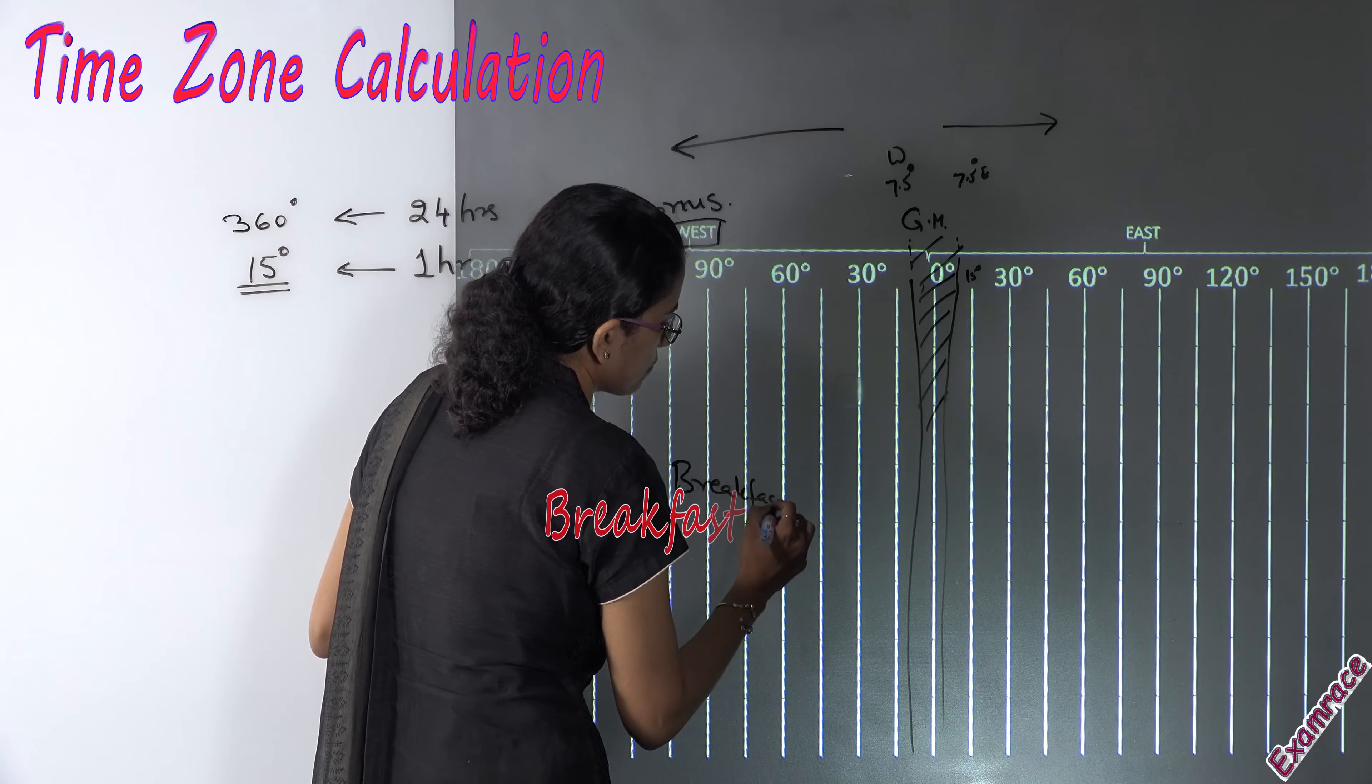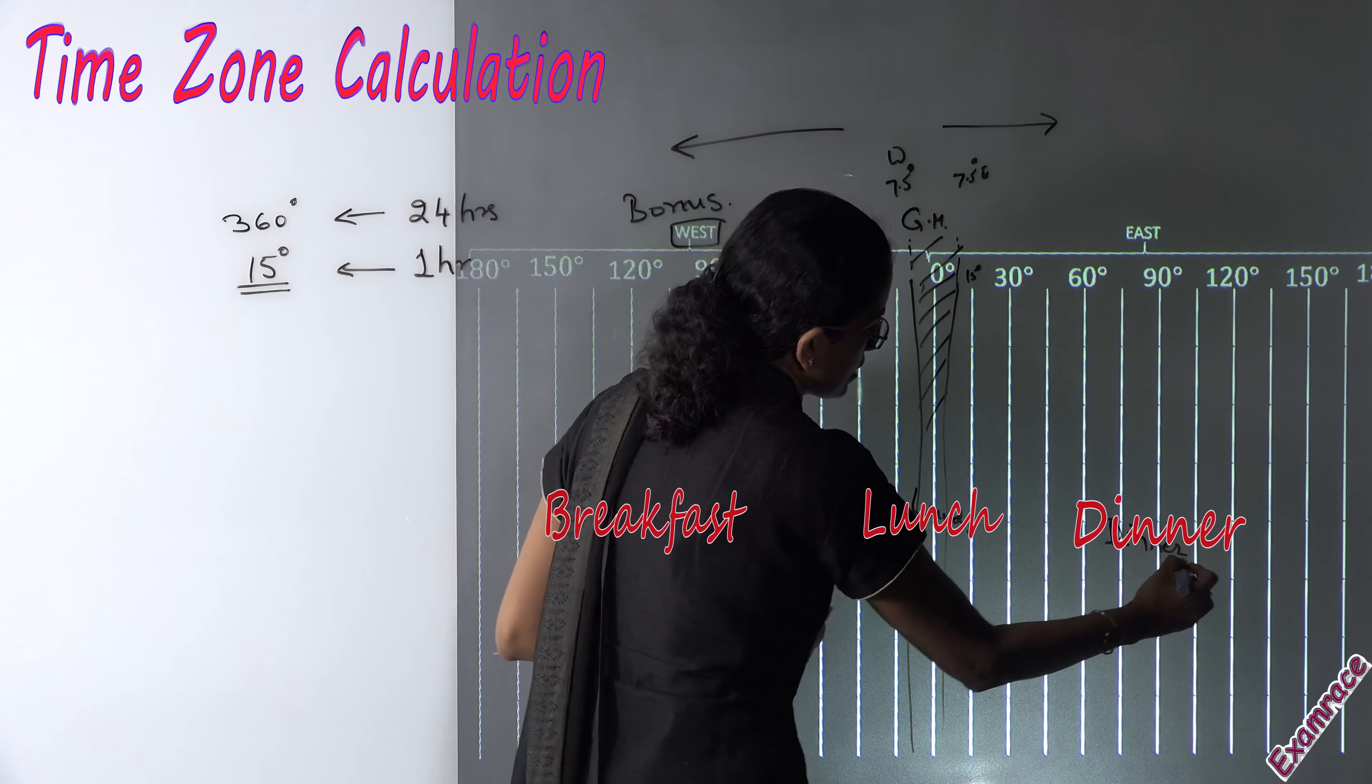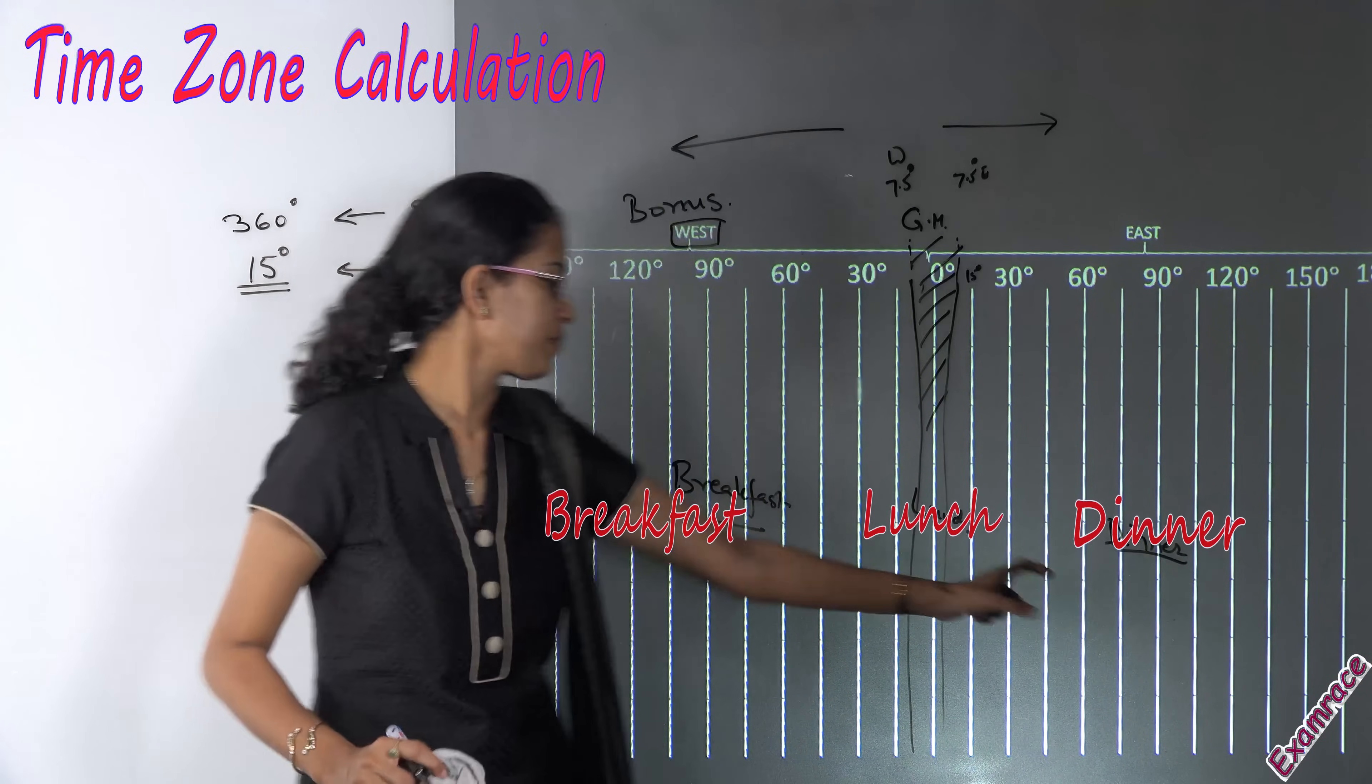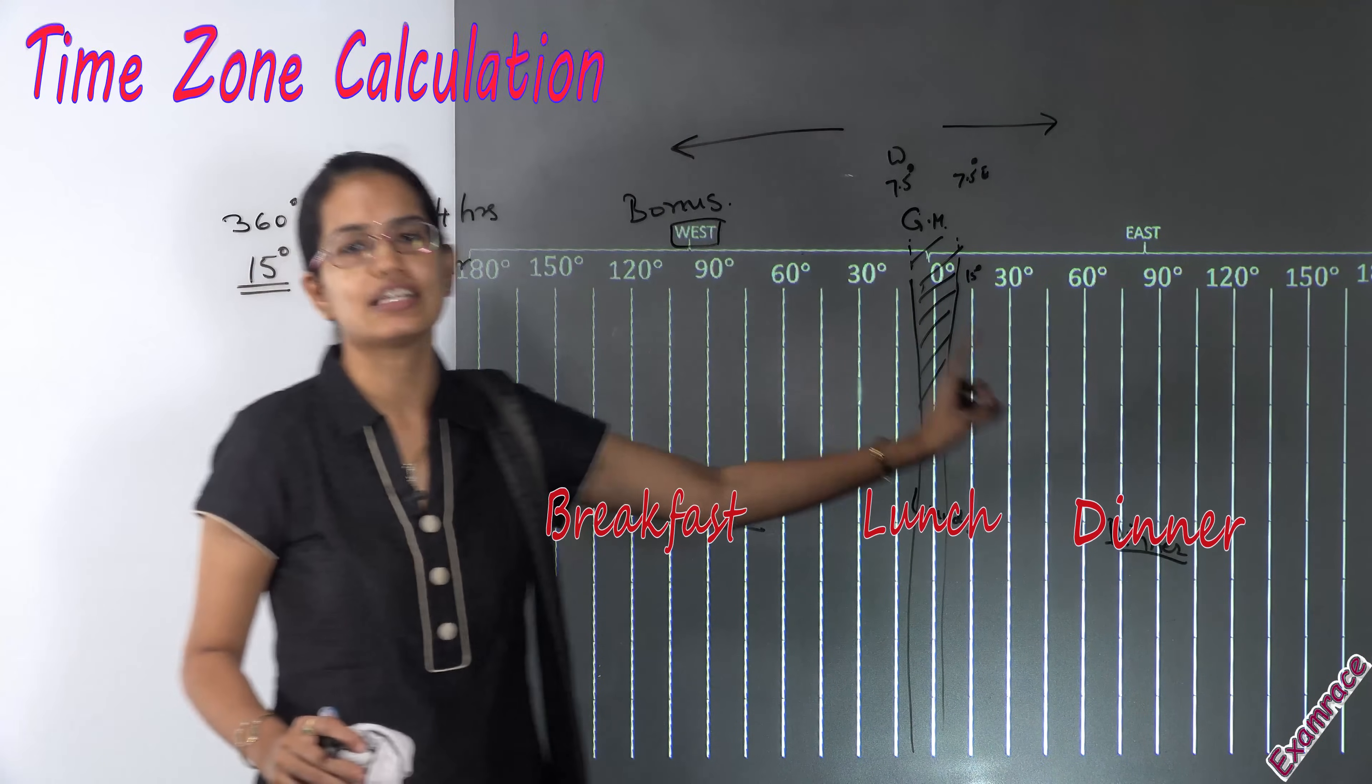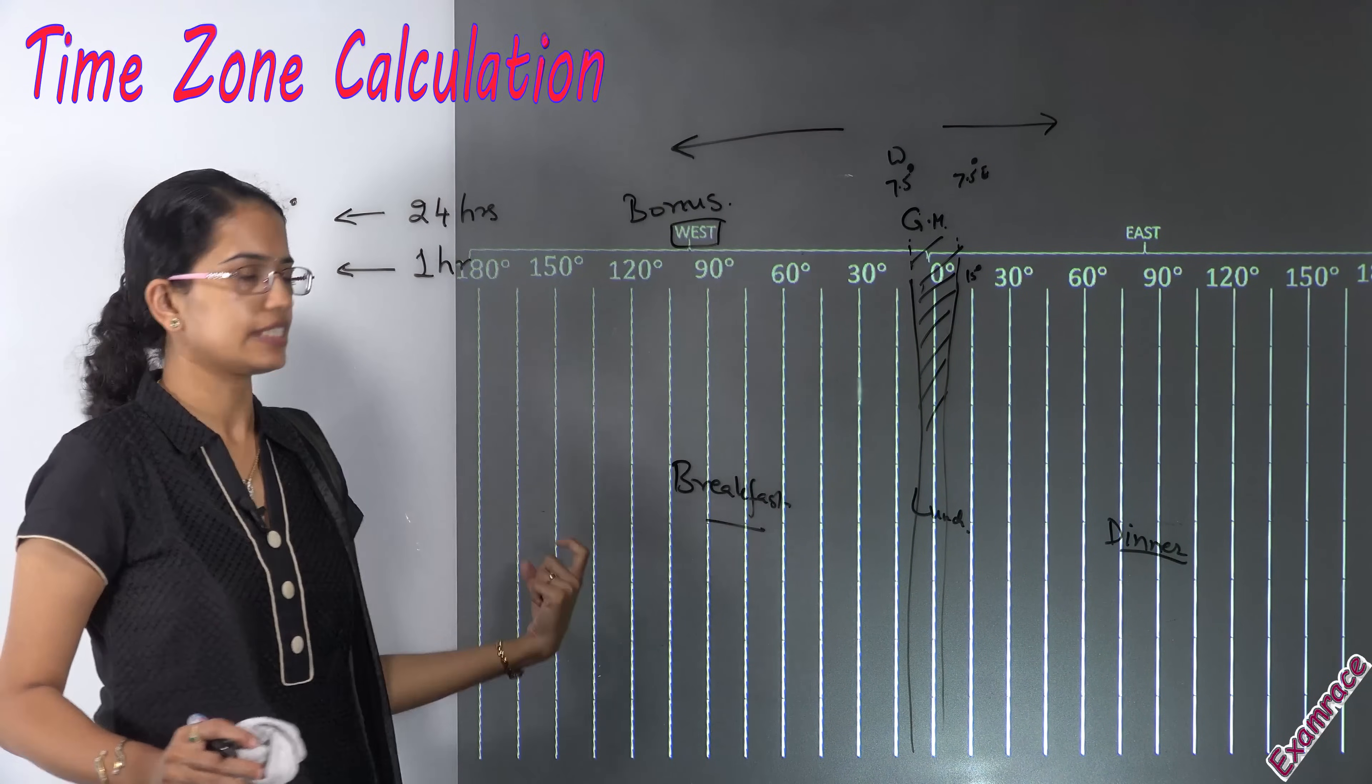At the point of 0 degree he would be taking his lunch and at 90 degree east he would be taking his dinner. So the person in the east is already taking dinner. However here the person is taking breakfast and he still has the whole day left. So he has a bonus time with him.